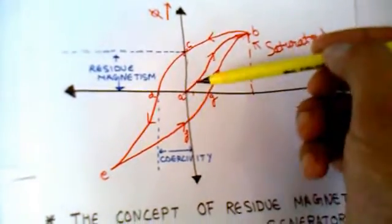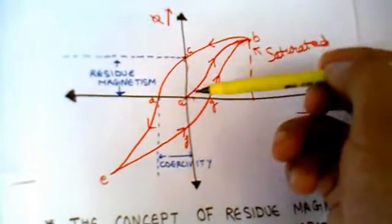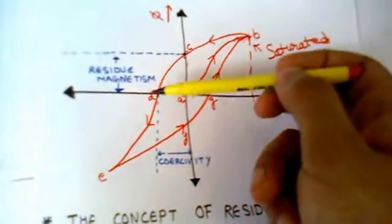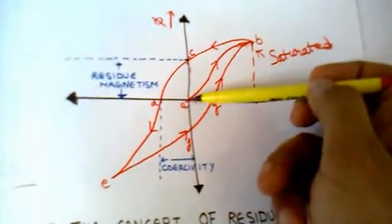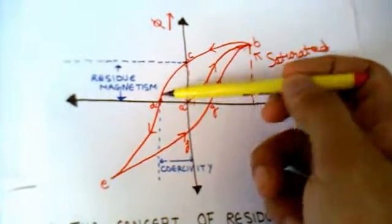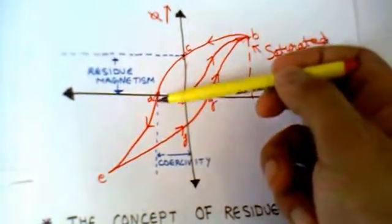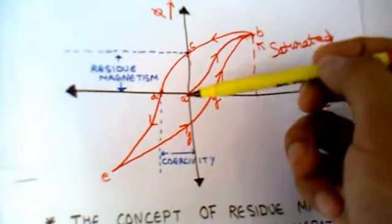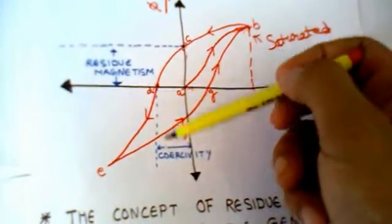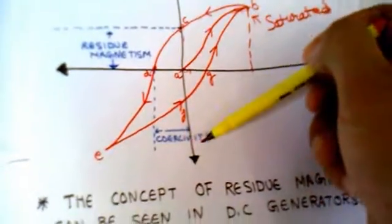You have to apply extra force, or current in the reverse direction, to make the flux equal to zero. And this extra amount of current that you have to apply to make the net flux equal to zero is called the coercive force.